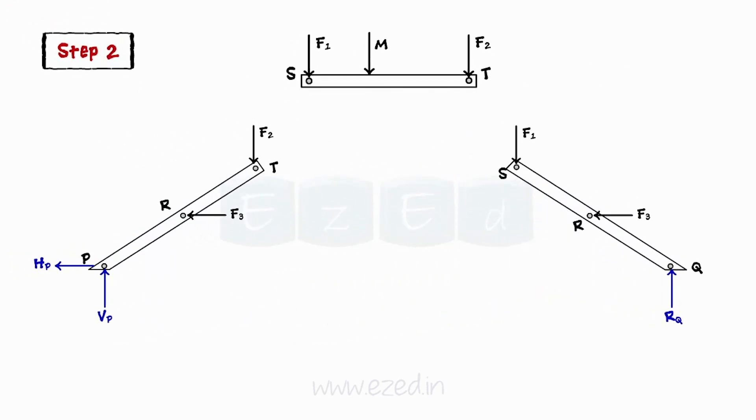Dismember the frame and draw the free body diagram of each member separately. At the internal connection, i.e. pin, the directions of components of the reaction are assumed on any one of the member and the opposite direction is assumed on the other member.